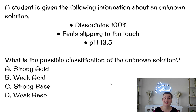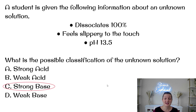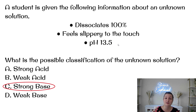Here is an example test question. A student is given the following information about an unknown solution: it dissociates 100%, it feels slippery to the touch, and it has a pH of 13.5. What is the possible classification of the unknown substance? The answer is a strong base. It dissociates 100%, so it's strong. It feels slippery, so it's a base. And a pH of 13.5 is a very high number — around 13 to 14 is a very strong base.